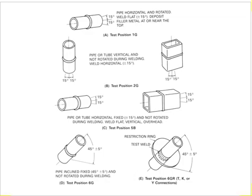For pipe, there are positions 1G, 2G, 5G, and 6G. 1G: pipe is horizontal and rotated during welding. 2G: pipe is vertical, not rotated — the welder moves around. 5G: pipe is horizontal but not rotated — the welder moves around. 6G: the pipe is at a 45-degree angle and the welder moves to do the welding. There is also 6GR — the restricted ring condition — which is a special and very difficult position used for special applications. The restriction ring is placed in this area and the welder must weld in that condition.